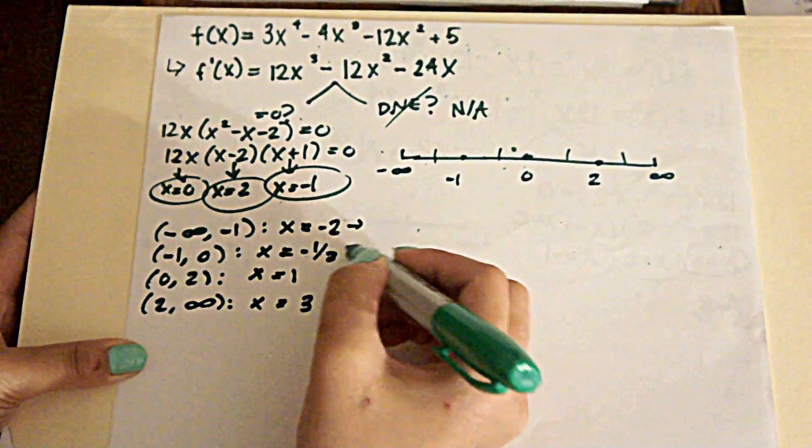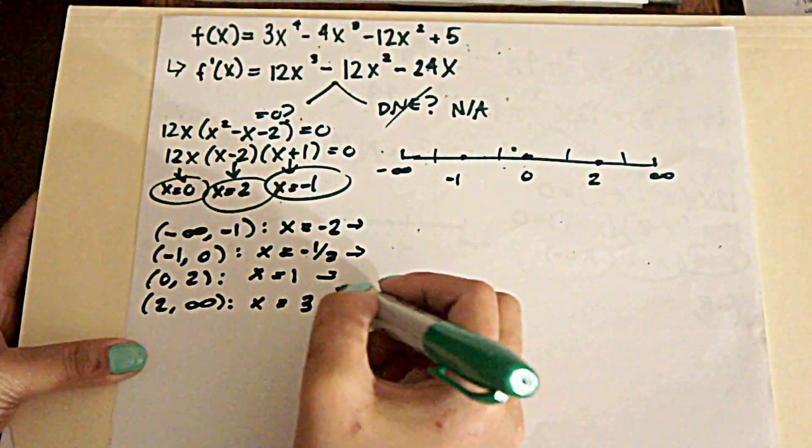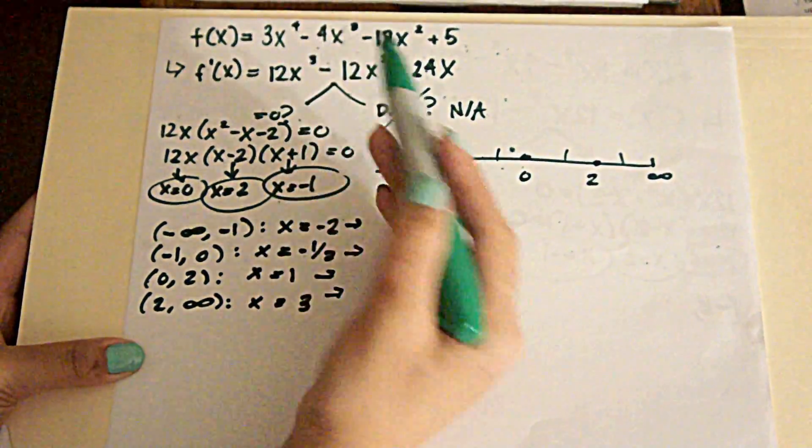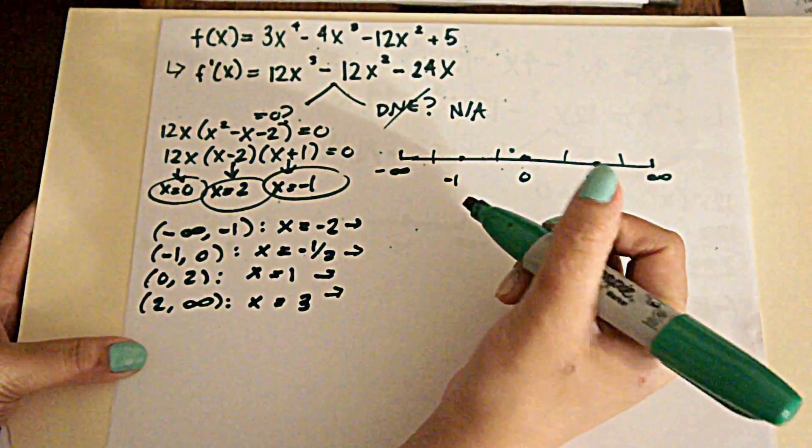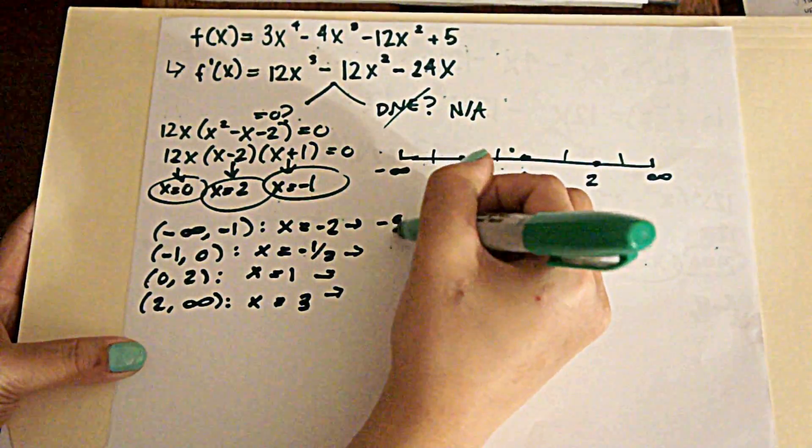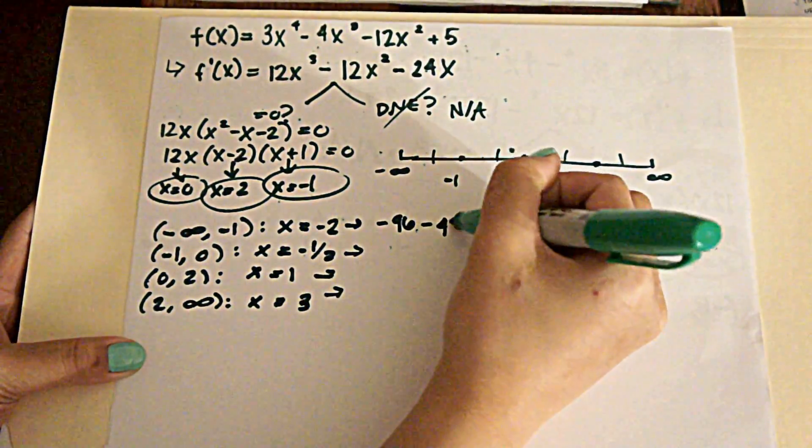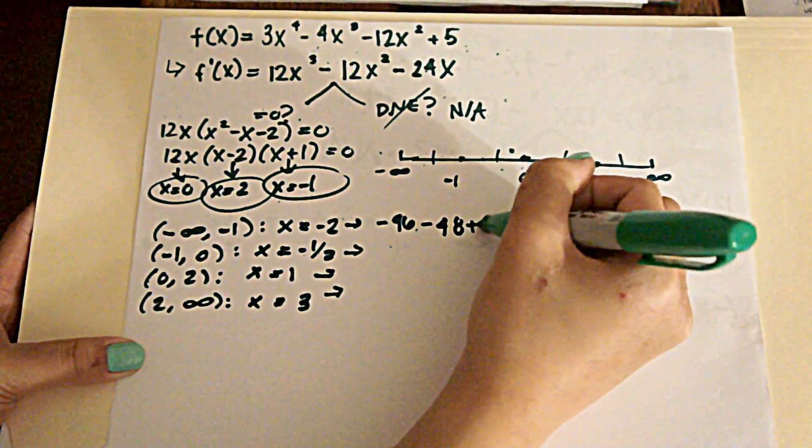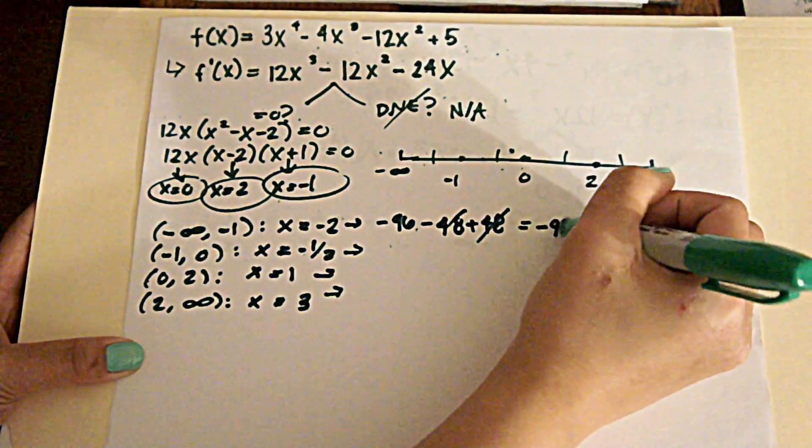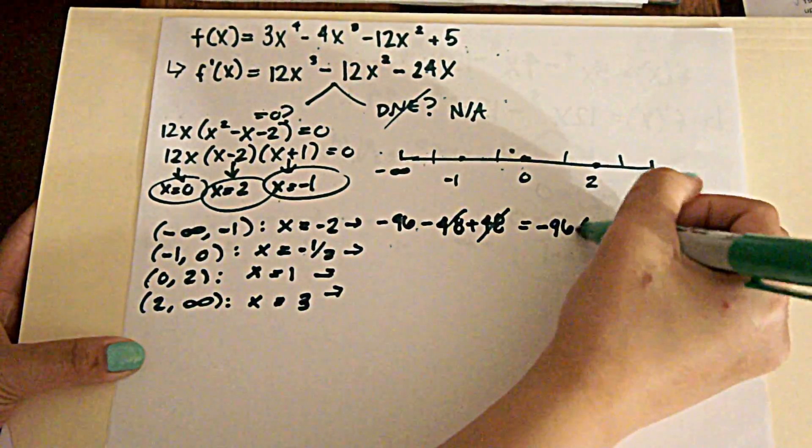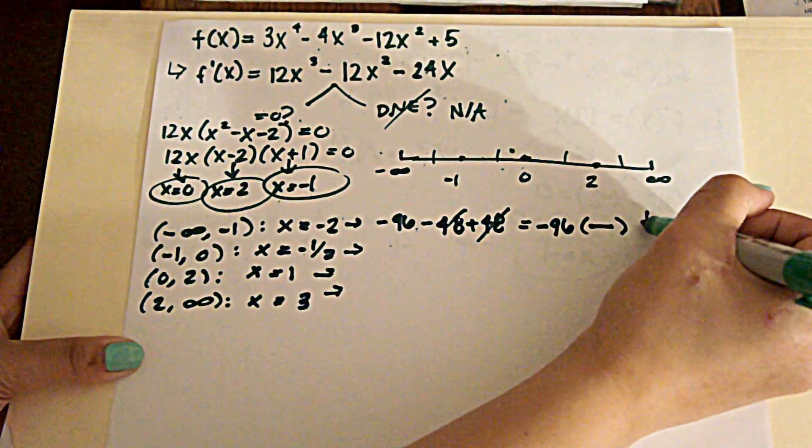We're going to go ahead and plug it in. We're going to plug it into the original function. We get negative 96 minus 48 plus 48. Those two cancel out. So we just get negative 96. Right away the negative tells us that we are decreasing.